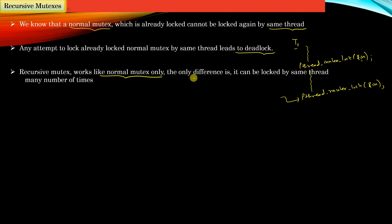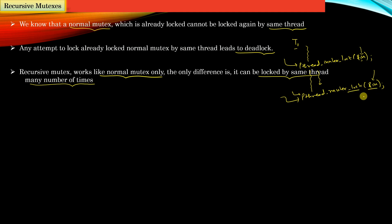Recursive mutexes work just like normal mutexes — the only difference is that a recursive mutex can be locked by the same thread as many times as it wishes. Suppose M represents a recursive mutex instead of a normal mutex. Thread T1 locks the recursive mutex, does some work, then locks the same recursive mutex again, and moves forward to do another piece of work. The thread does not enter a deadlock state despite locking the recursive mutex again.